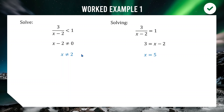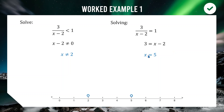Our solution revolves around x = 2 and x = 5 — we just don't know whether it's between, outside, or a combination of both. We draw a number line with dots at 2 and 5, then test values in each of the three regions: less than 2, between 2 and 5, and greater than 5.